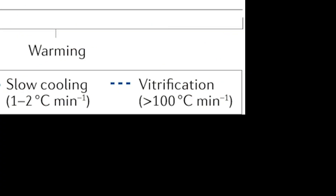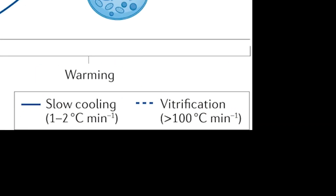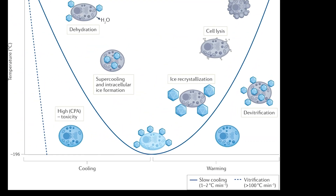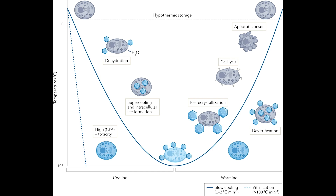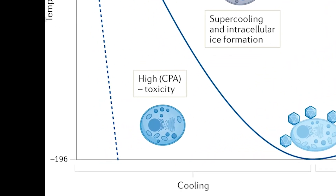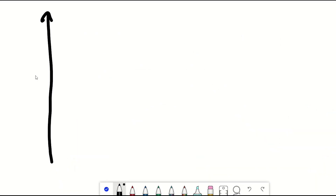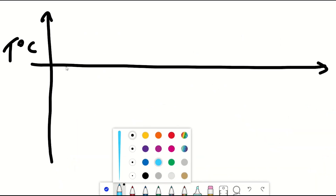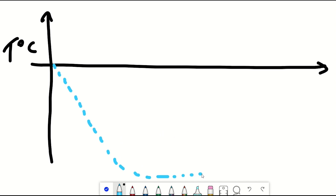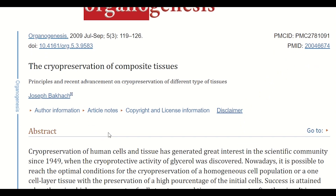One way of preventing ice crystals is through vitrification — the process of changing a liquid into a hard substance that doesn't contain crystals. This works by adding a high concentration of cryoprotectants and ice blockers to water and cooling the sample really fast, so fast it becomes a glass. But while these strategies have some efficacy, problems remain.